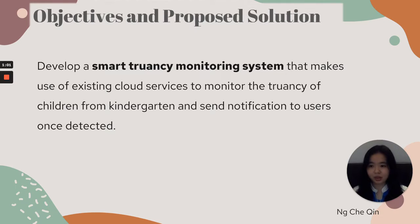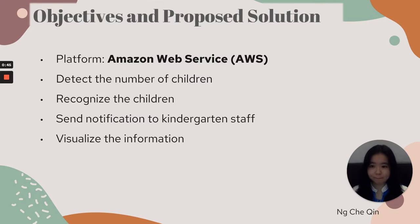Objective and Proposed Solution: This project is to develop a Smart Truancy Monitoring System that makes use of a cloud service to monitor the truancy of children from kindergarten and send notifications to users once detected. The platform used is a major web service that can detect the number of children, recognize the identity of children, send notifications to kindergarten staff, and also visualize the information with smart charts and tables.